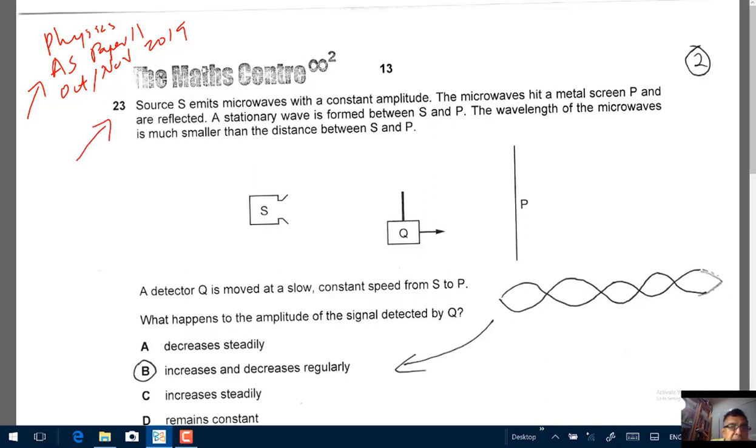So question 23, we have source S emits microwaves with a constant amplitude. S is here. The microwaves hit a metal screen P and are reflected. A stationary wave is formed between S and P. The wavelength of the microwaves is much smaller than the distance between S and P.